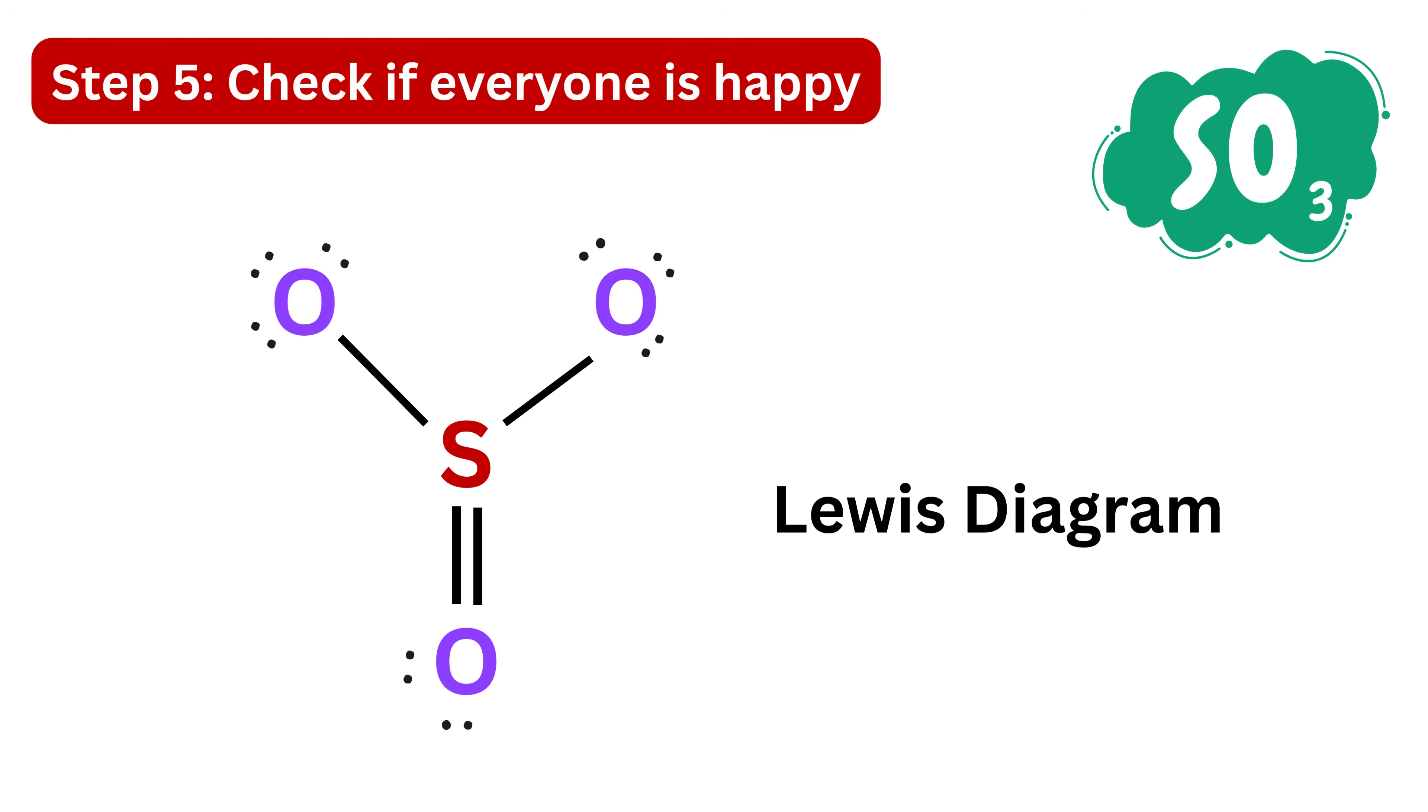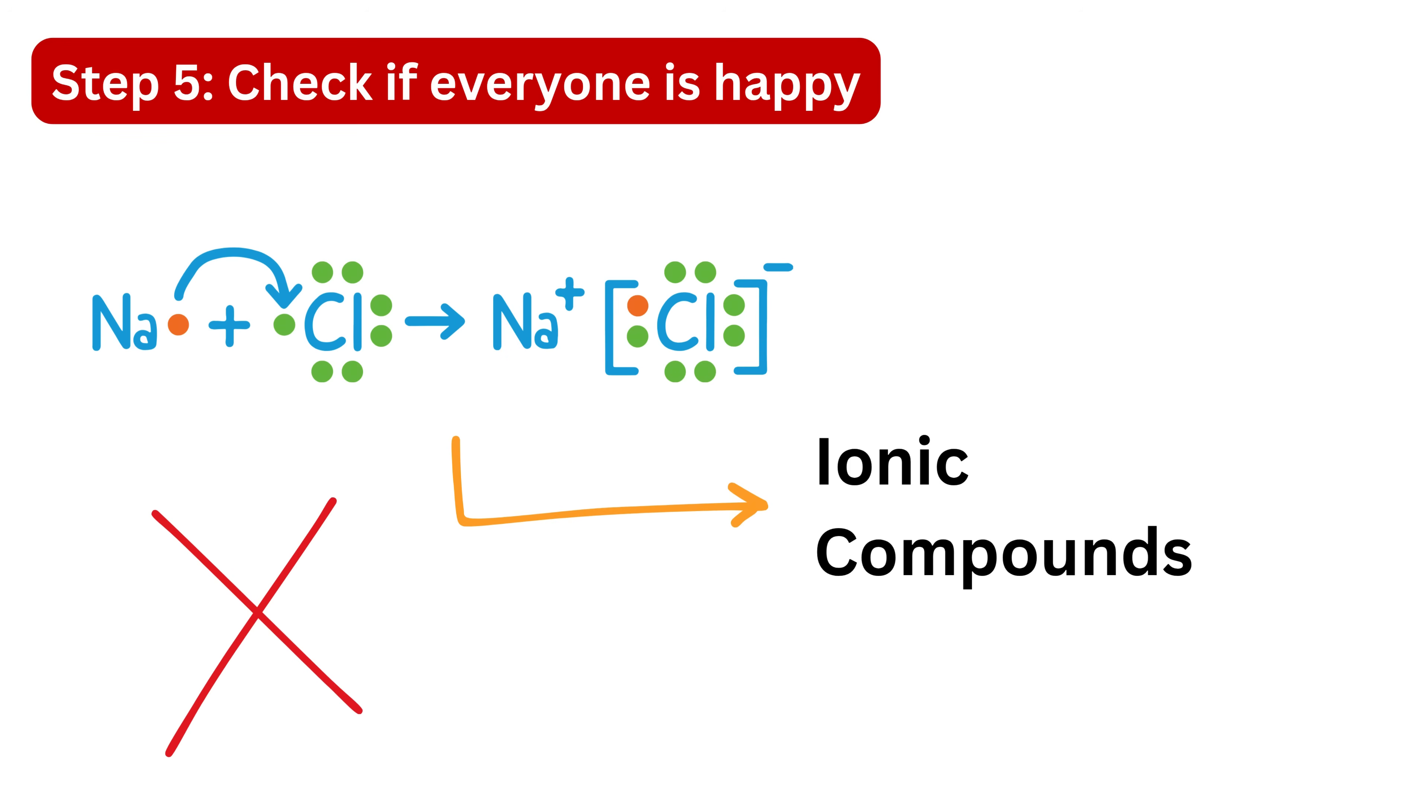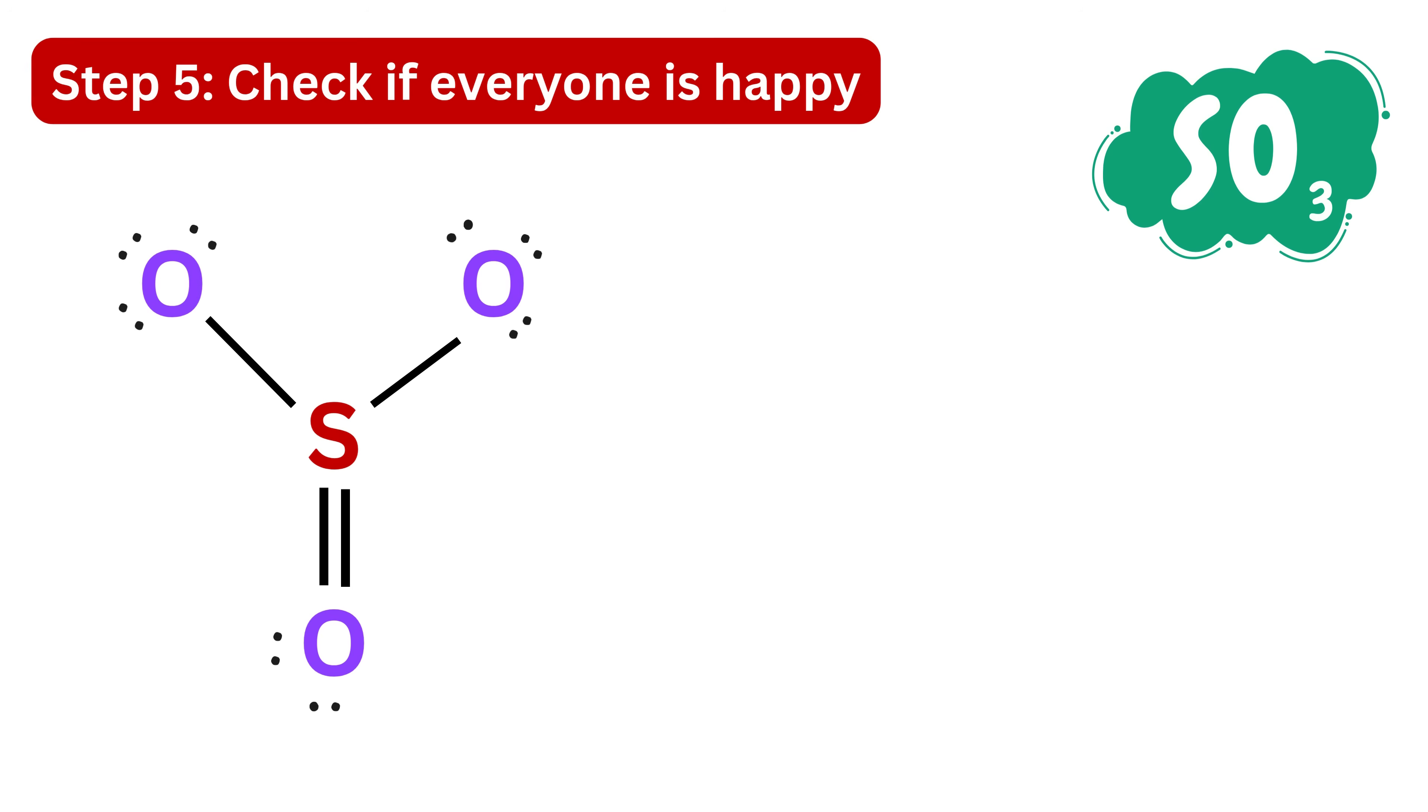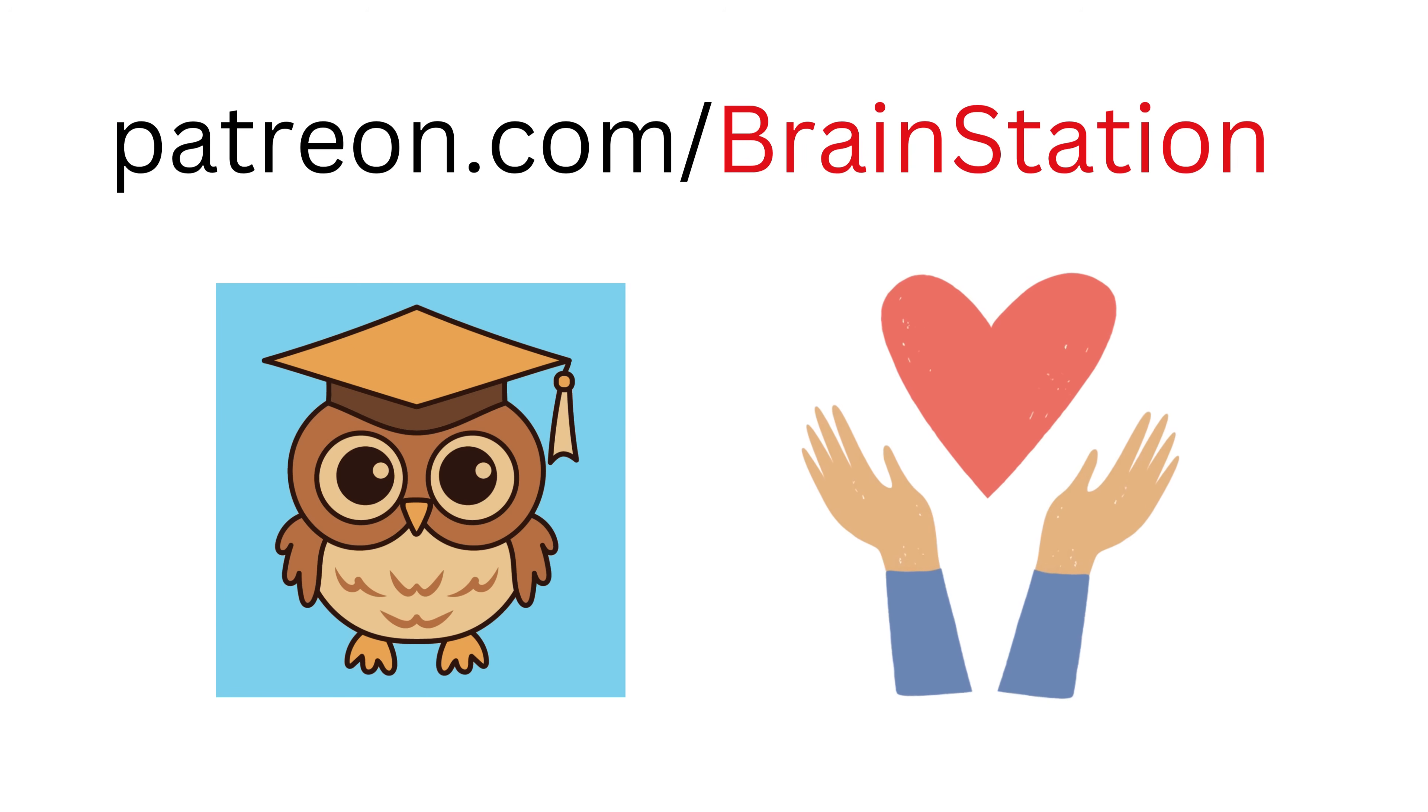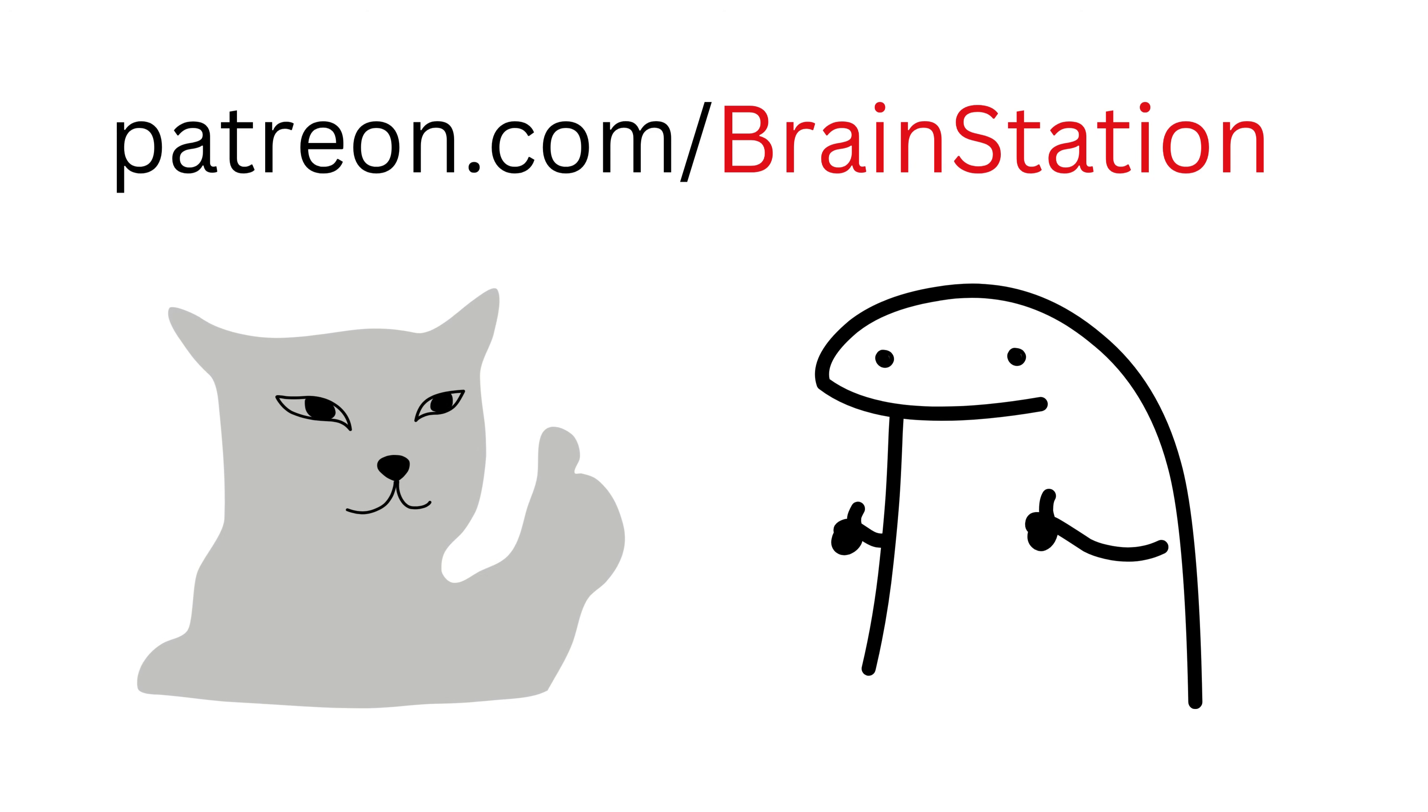And that's it! Now, before we wrap it up, note that Lewis diagrams are especially useful for covalent compounds where atoms share electrons with each other, rather than transfer them completely like in the case of ionic compounds. Every concept that comes after the Lewis diagram, like molecular geometry, polarity, hybridization, starts from this simple dot diagram. If you enjoyed this video, please don't forget to like, share, and subscribe to our channel. Also, you can support my channel by joining our community and becoming a member.